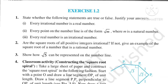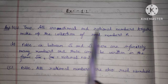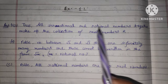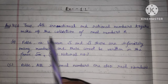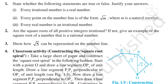Today we will start Exercise 1.2. The first question is: State true or false and justify your answers. The first statement is that every irrational number is a real number. This is true. All the irrational and rational numbers together make up the collection of real numbers. Real numbers are rational plus irrational numbers, so all irrational numbers are real numbers.